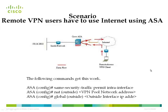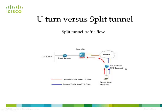Scenario 1: Remote VPN users need to access the internet using the ASA. In this scenario, the ASA acts as a VPN gateway, and VPN users can access internal resources through the VPN. To allow users to access the internet via ASA, you bend the traffic at the outside interface and route it to the internet. The traffic sourcing from the VPN pool should have a dynamic translation, achieved using NAT and global statements — both associated with the outside interface.